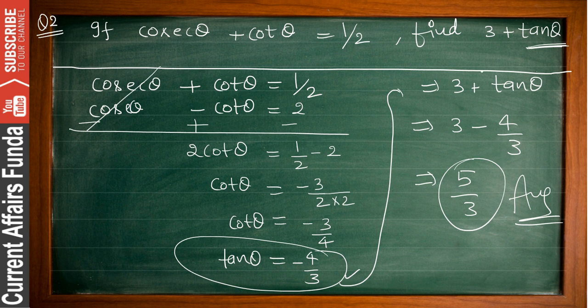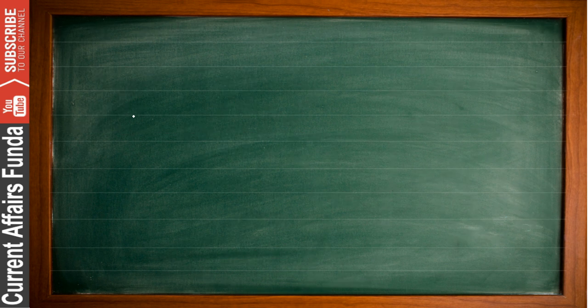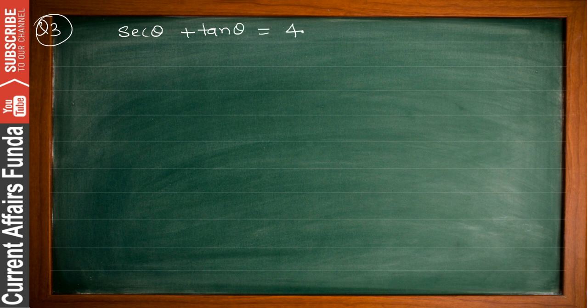In this question we saved cot θ and cancelled cosec. We subtracted equation 1 from equation 2, so the sign changed automatically. This one is very similar to the previous question and also a bit tricky.